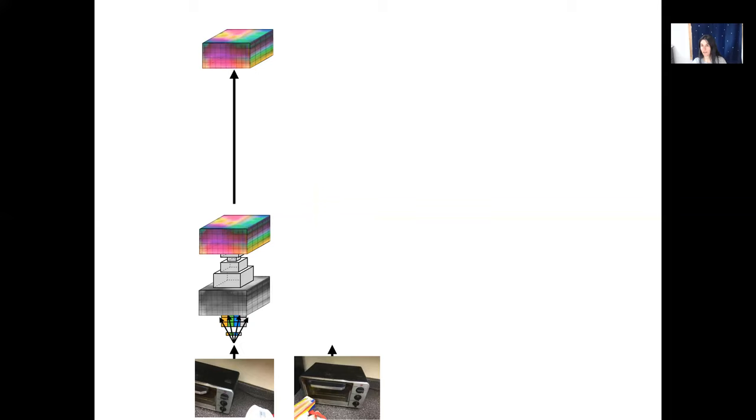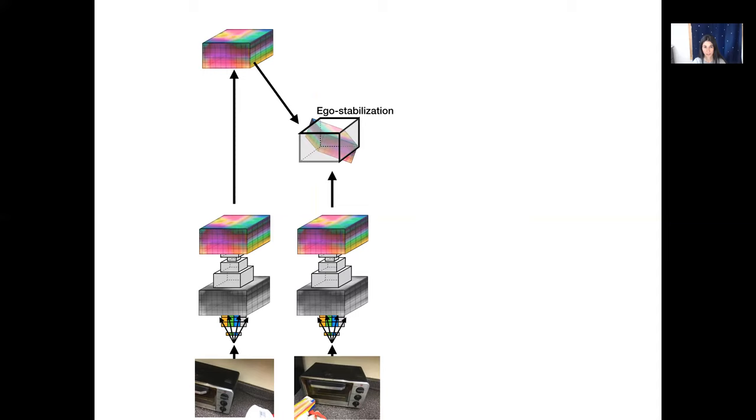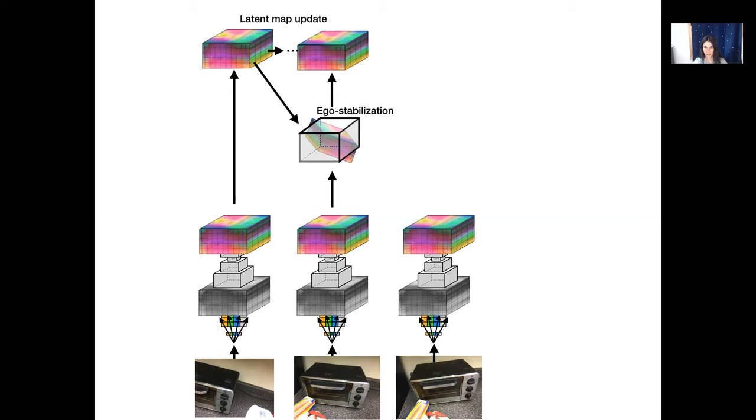But here comes a 3D convolutional network whose job is to densify that feature volume. And here comes another frame. The scene hasn't changed, hasn't moved, but the camera has changed. And again, we pass the second frame through this unprojection and again the 3D CNN. And here comes the EgoMotion estimation process that estimates the 3D rotation and translation between the first time step and the current time step. And we explicitly transform the features to cancel this estimated EgoMotion before we fuse the map so far and the current frame's map. And again, the same thing, the new frame, we instantiate its feature map. Now this feature map that you see and the one we have up on the top of the slide are in different coordinate frames. And here comes the Ego stabilization to bring them in the same coordinate frame.